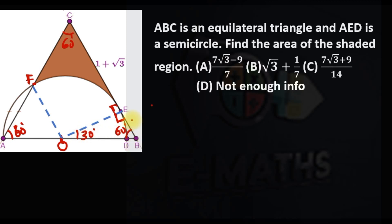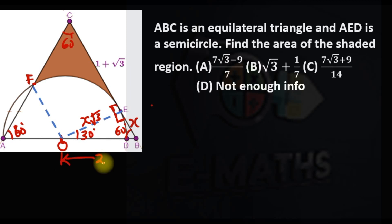From our 30-60-90 triangle theorem, the ratio of the sides of any 30-60-90 triangle is 1 : √3 : 2. So if the side opposite 30 degrees is x, that means EB is x, the side opposite 60 degrees is x√3, and the side opposite 90 degrees is 2x.